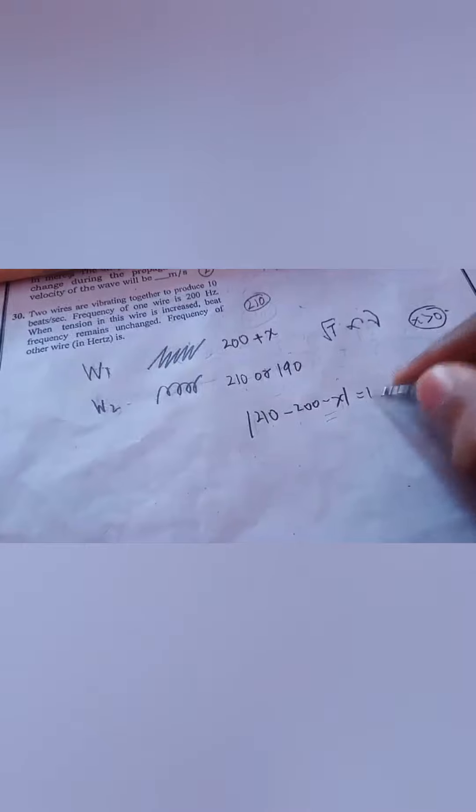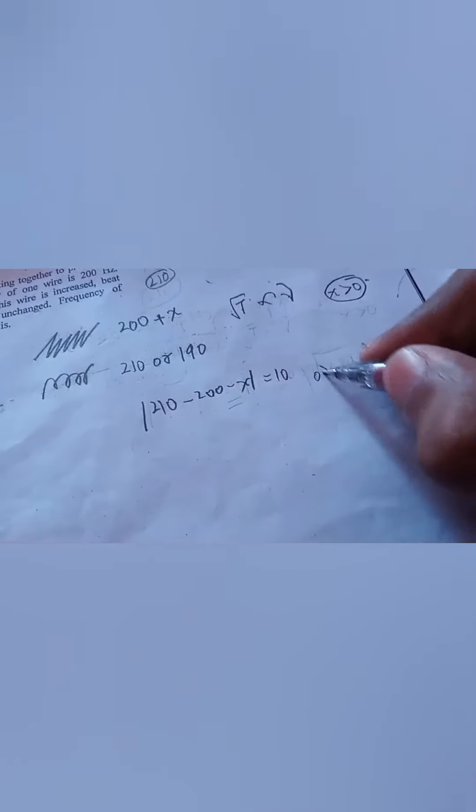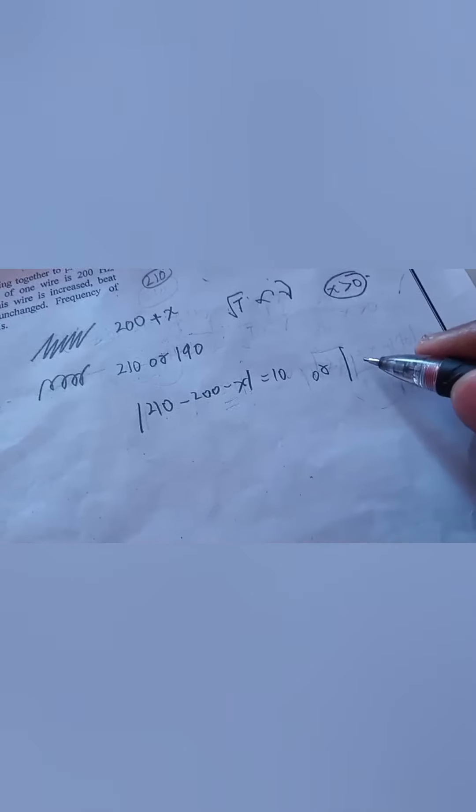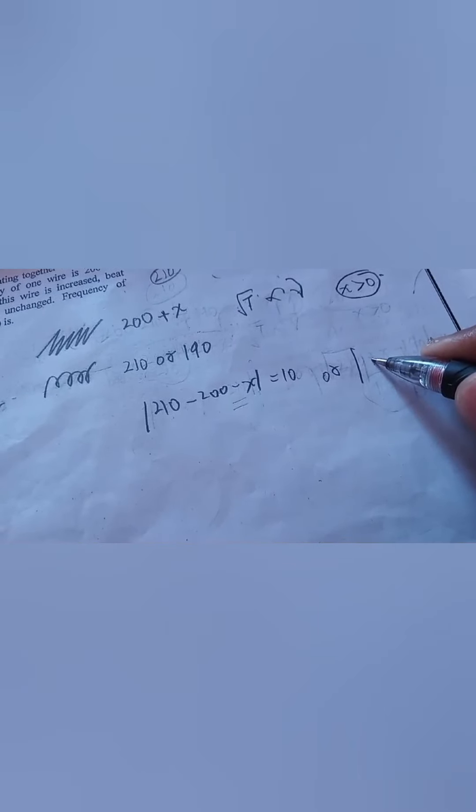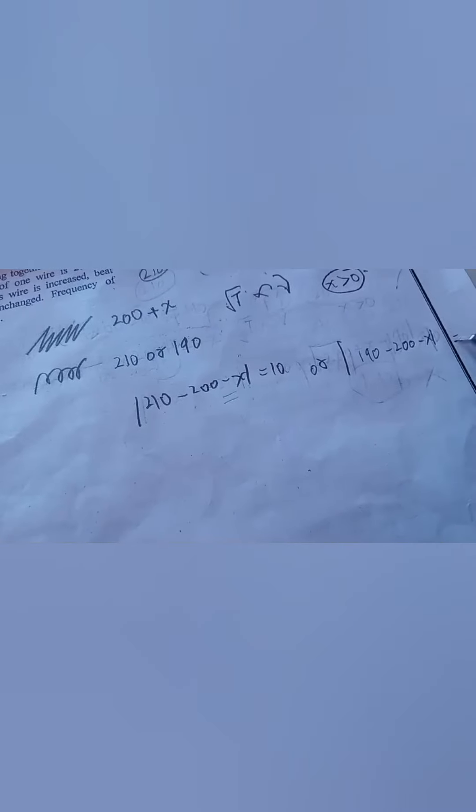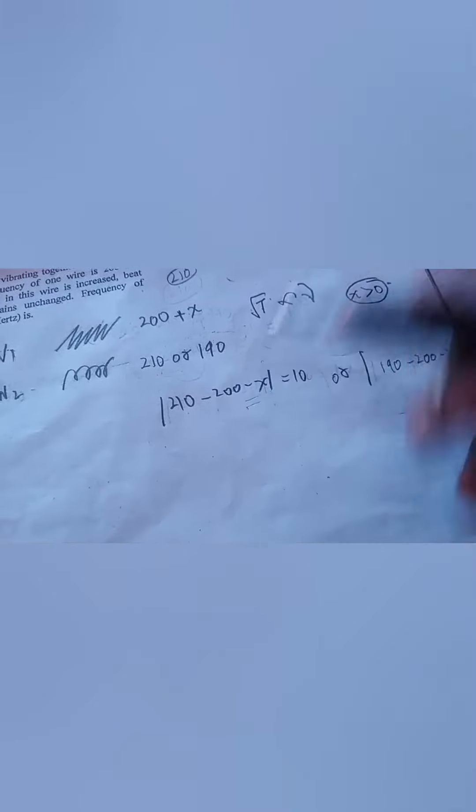So I can have two possible ways: mod of 210 minus 200 minus x equals 10, or mod of 190 minus 200 minus x equals 10. So let us check out this one.